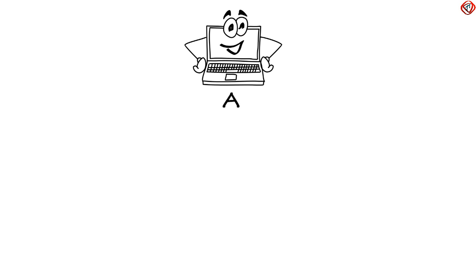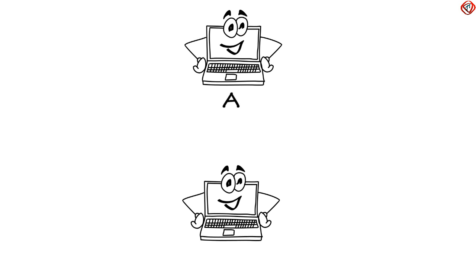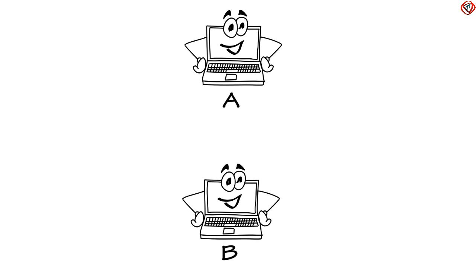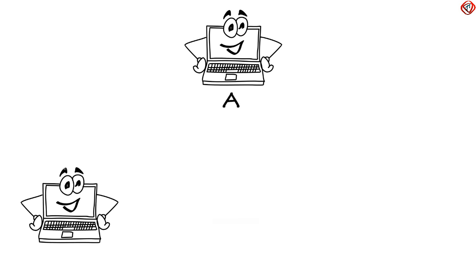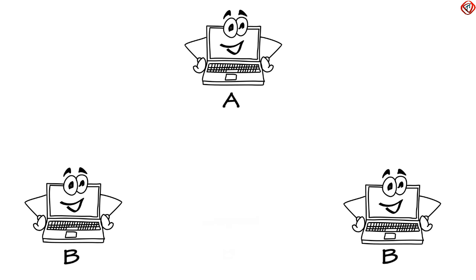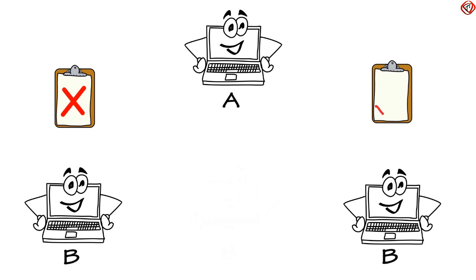Consider Computer A is transferring a movie to Computer B. Consider two cases: first, when they are not following a set of rules and conventions, and second, when they are following a set of rules and conventions.